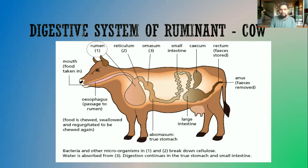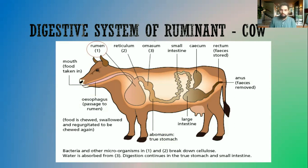After the food is ingested in the mouth, it goes down into the oesophagus and then into the rumen. Ruminants have four-chambered stomachs. The four stomachs are the rumen, the reticulum, the omasum, and the abomasum. The food will first enter into the rumen.